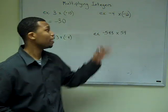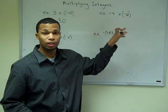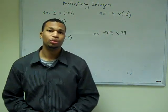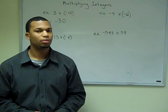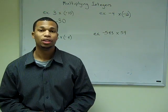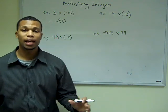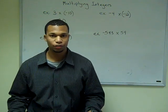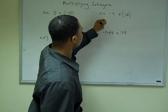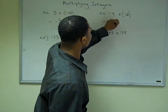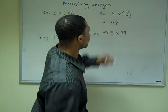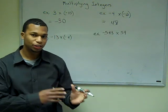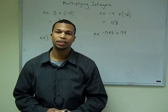In our next example, we have negative 4 times negative 12. Remember our first rule: if our signs are the same, our answer is going to be positive. So therefore we blindly multiply — 12 times 4 is 48. Since both signs are the same, our answer is going to be positive 48.